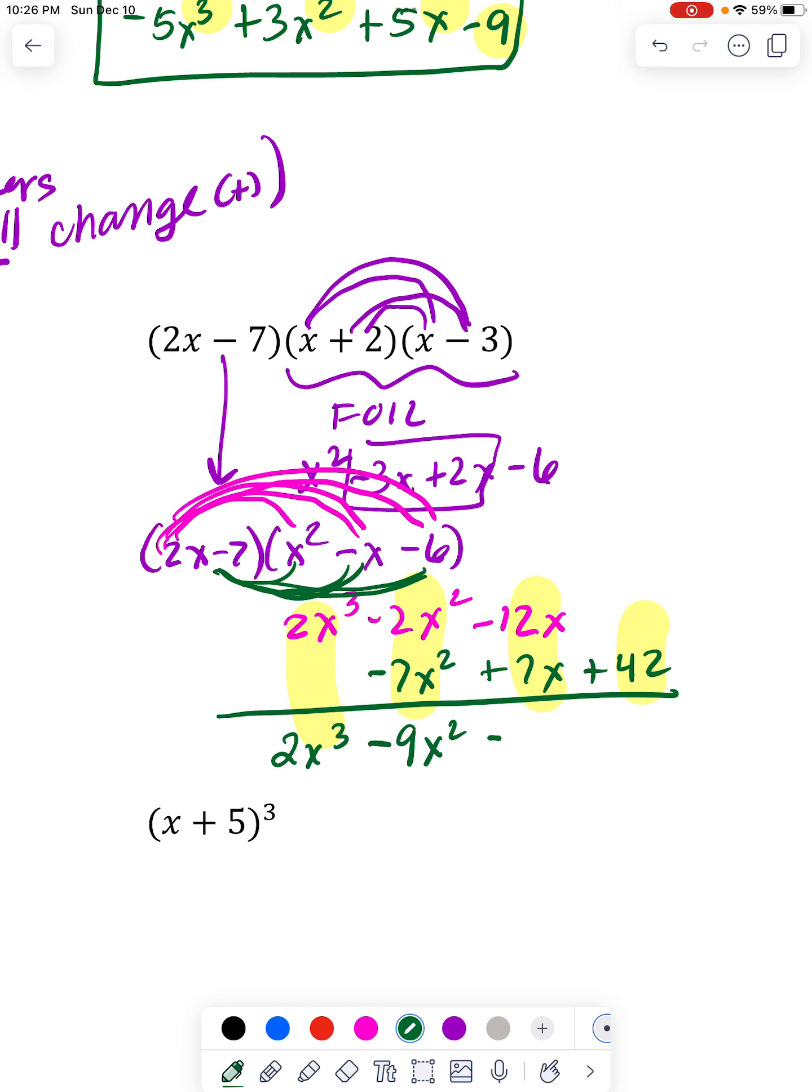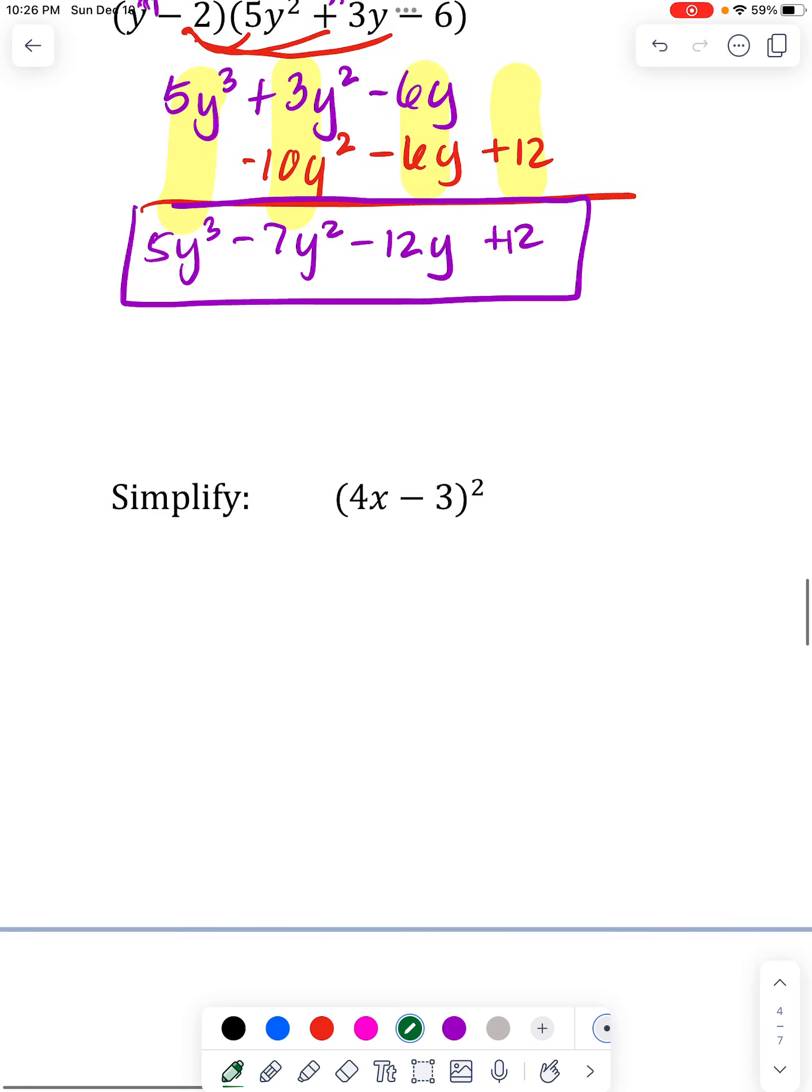-12 plus 7 makes -5x's. And then the 42 is just kind of chilling on its own. So it stays 42. All right.